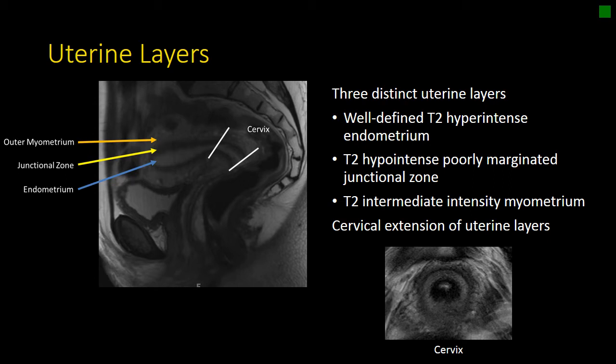In the cervix, we think about the endocervical tissue or the glandular tissue, the junctional zone of the cervix, and then the cervical myometrium. You can see a nice example of those three layers of the cervix in the lower right-hand corner of the screen: the endocervix, the junctional zone, and the cervical myometrium.